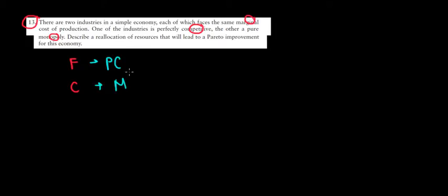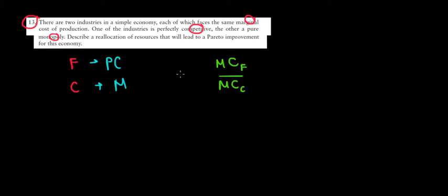What we also know is that the marginal costs are the same. If we speak about the ratio of the marginal costs of production — the marginal cost for the food industry relative to the marginal cost of the clothing industry — recall that this ratio is the MRT. And because the marginal costs are equal, this ratio is going to equal one.